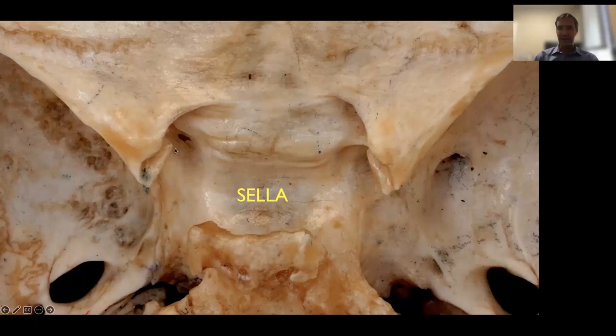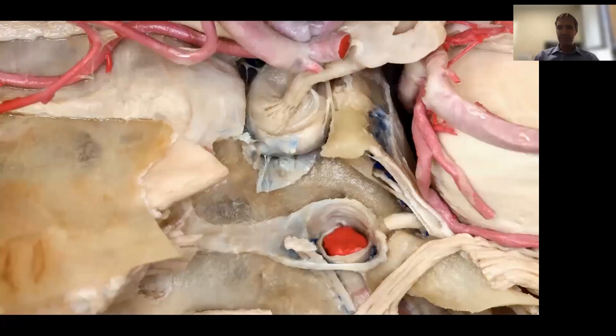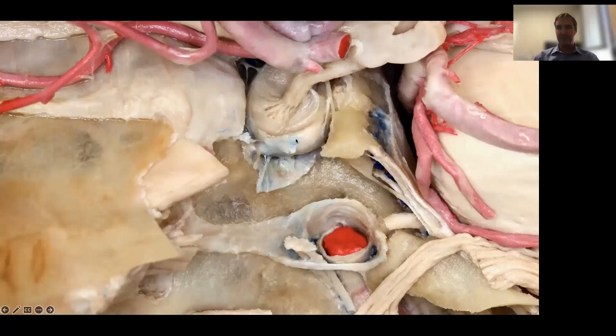There is a groove on each side of the sella. This groove contains a very important structure — the carotid artery — which runs in the area called the cavernous sinus. If we start putting more structures around, you see the pituitary gland within the sella. The tuberculum sella is at the front; the dorsum sella is at the back. The posterior gland is hidden in the dorsum sella. This parasellar region is adjacent to the sella and is the area of the cavernous sinus.